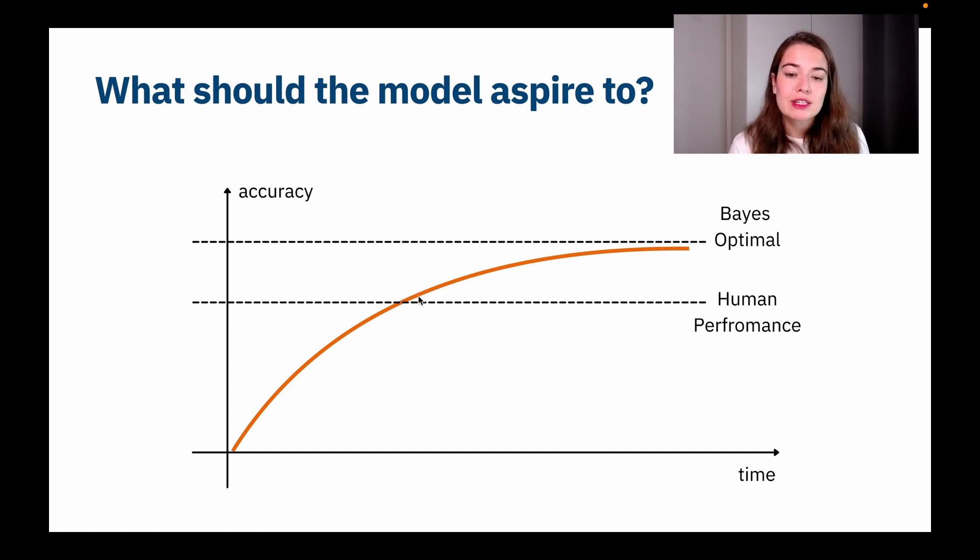But after human performance is kind of like uncharted territory. That's why progress seems to be slower and we can never really get higher than Bayes optimal. You can get really close to it, maybe you can even achieve it, but you cannot really get past it. So these are just some definitions that's good to keep in mind.